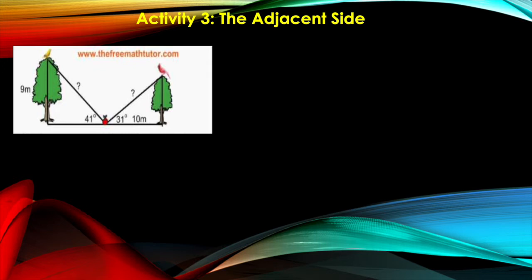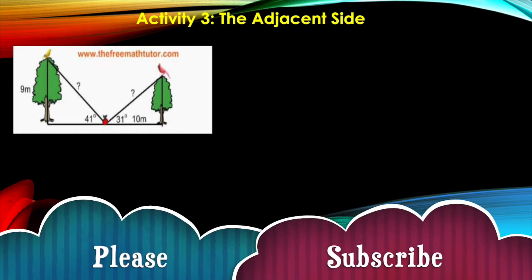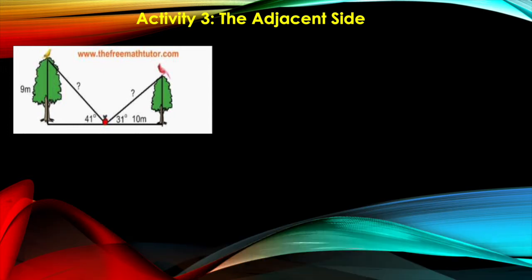In activity two, we solved for the opposite side and we used the small triangle with the shorter tree. But in the next activity, which is solving for the adjacent side, we are going to use the larger triangle with the taller tree and the reference angle of 41 degrees on the ground with the apple.